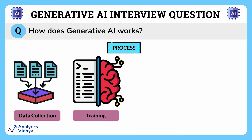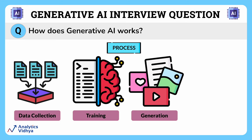After training, the next step is generation. Once trained, the model can generate content by taking a seed input and predicting the subsequent elements in that sequence. For instance, if you give it the start of a sentence, it can complete the sentence in a coherent and contextually relevant manner.